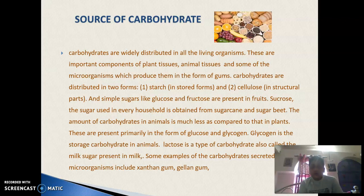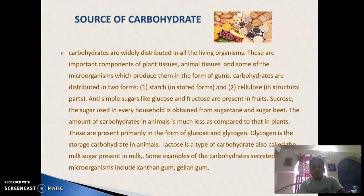Simple sugar or glucose is present in fruits. The sugar used in every household is obtained from sugar cane or sugar beet. The amount of carbohydrate in animals is much less compared to that in plant molecules. In animals, carbohydrates are present primarily in the form of glucose and glycogen — glycogen is the stored form. Lactose is a type of carbohydrate also called milk sugar. Carbohydrates are also secreted by many microorganisms, such as xanthan gum and gellan gum.